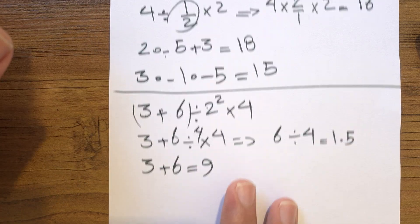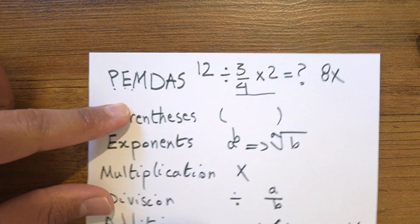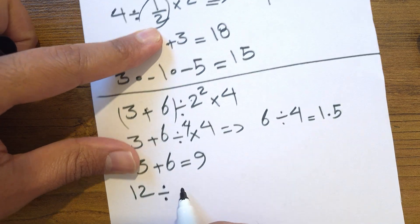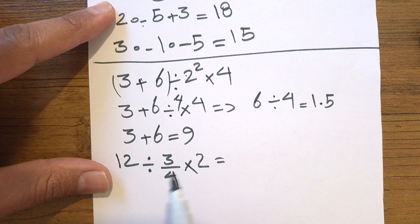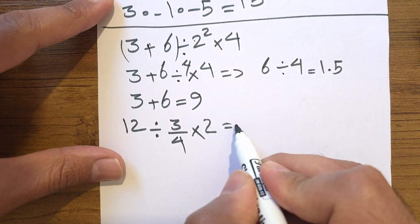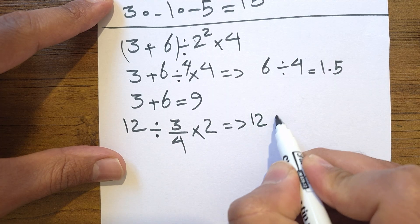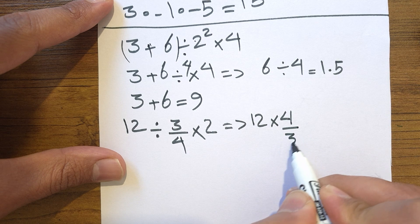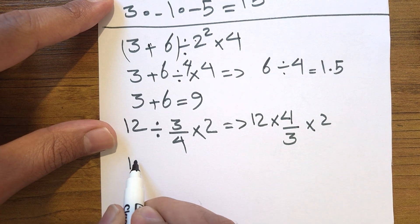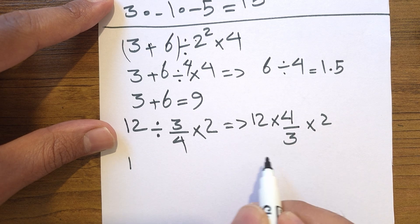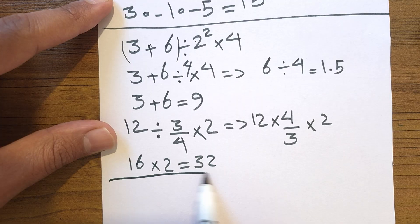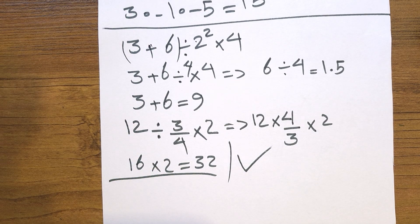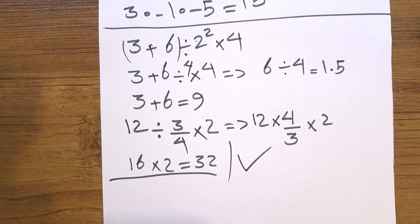Now let's go back to our final problem: 12 divided by 3 quarters times 2. Division and multiplication — go left to right. 12 divided by 3/4 is the same as 12 times the reciprocal 4 over 3, which is 16. Then 16 times 2 is 32. Make sure to drop your thoughts in the comments below. Please like the video, and see you in the next episode on Prime Logic.